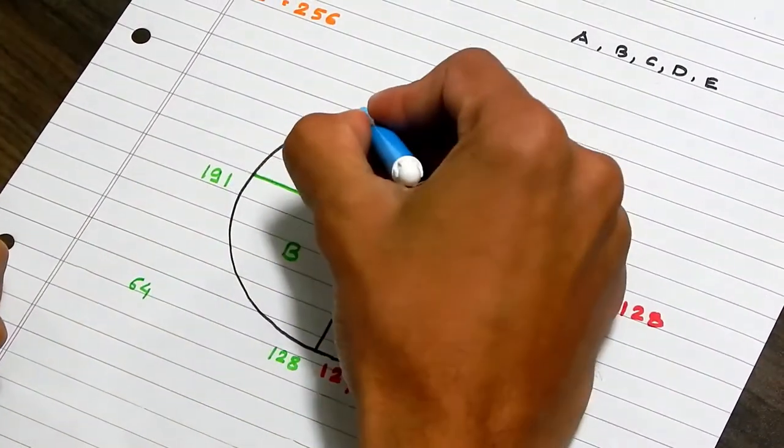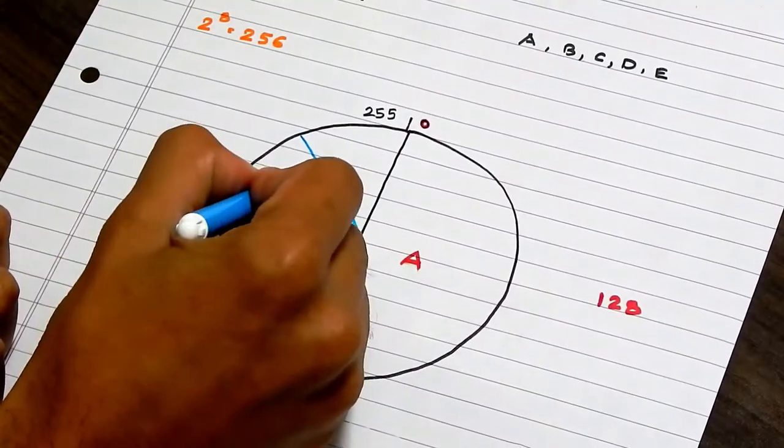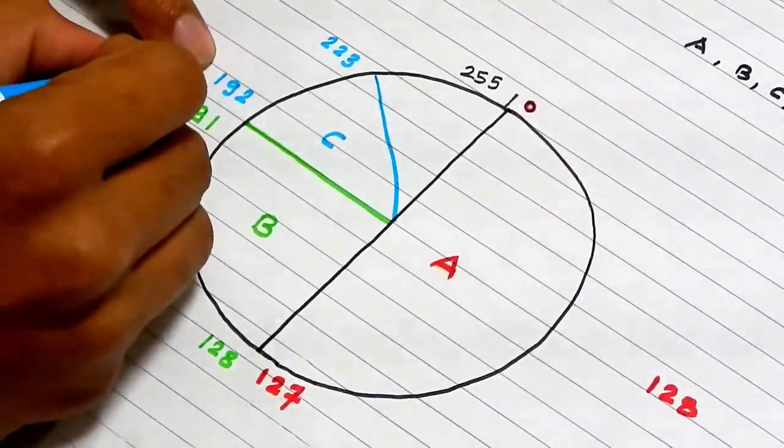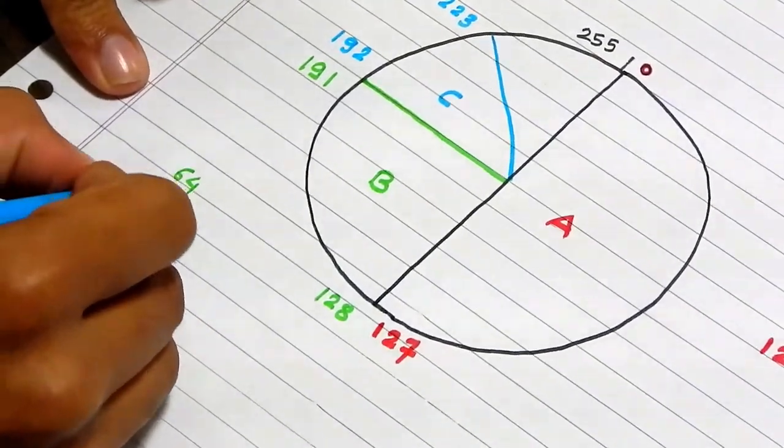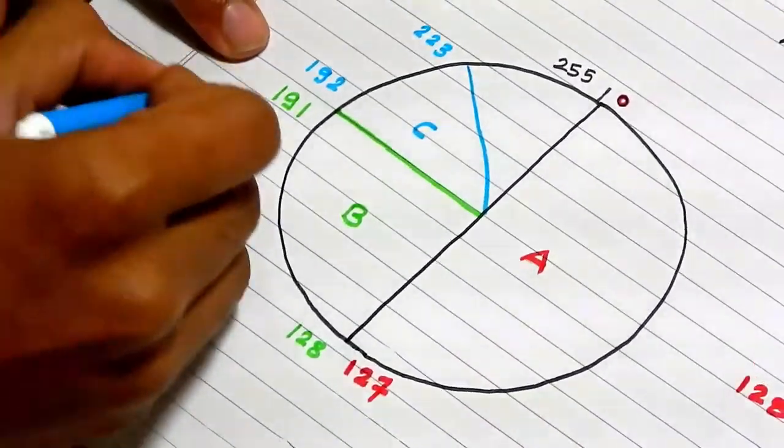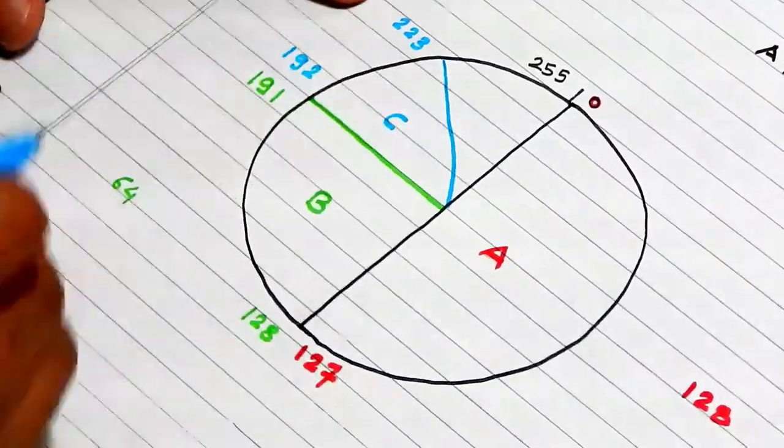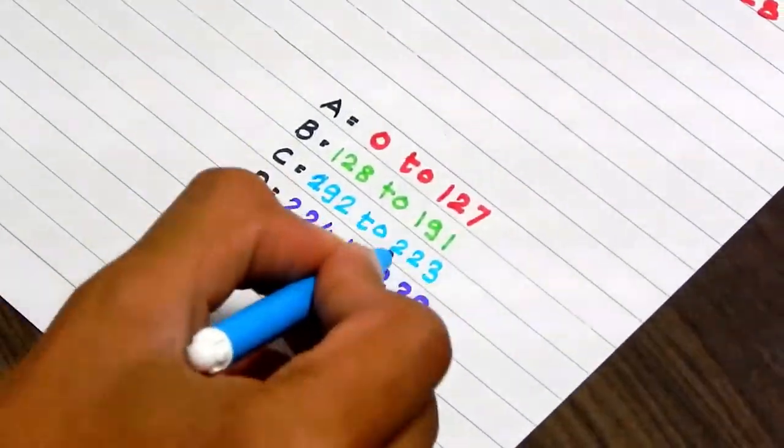For remaining classes, we will divide this quarter circle into two parts. This will become class C. The starting address of the class C is 192. For ending address, we will divide 64 by 2 is 32. By adding 32 in 191, we get 223. So, range of the class C is 192 to 223.